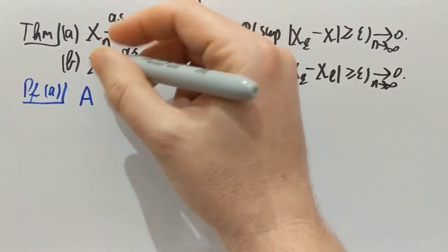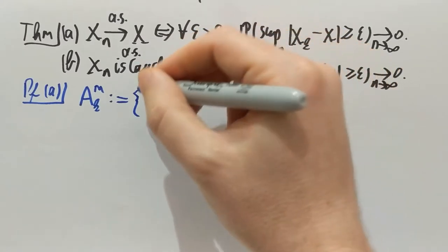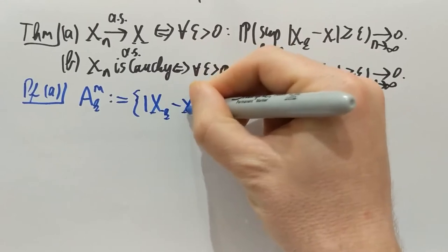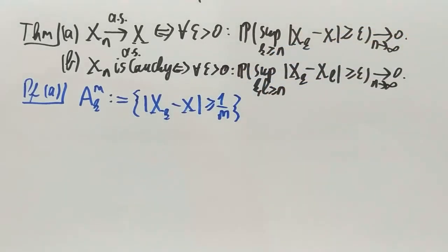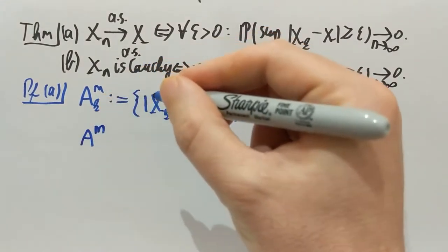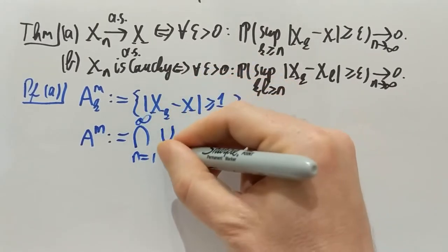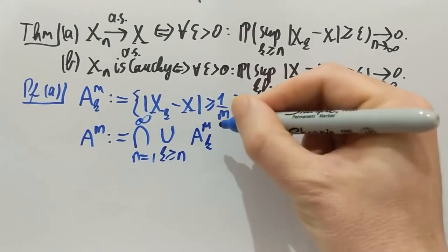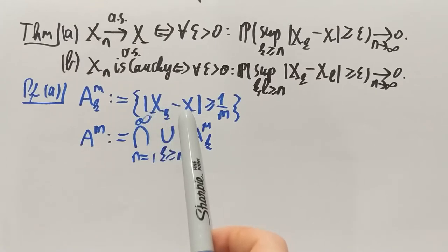The proof starts with the following events. A(k,m), for k and m positive integers, is defined to be the event that |xk minus x| is at least 1/m — so xk differs from x by at least 1/m. I'm also going to look at the limsup of these events in k. The limsup is the intersection of the union of the tails over k at least n of A(m,k). The limsup means this event happens infinitely often in the index k — there will be infinitely many random variables xk which differ from the limit x by at least 1/m.